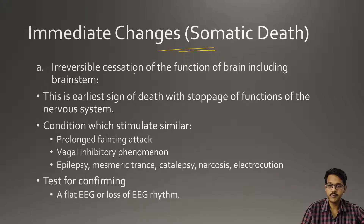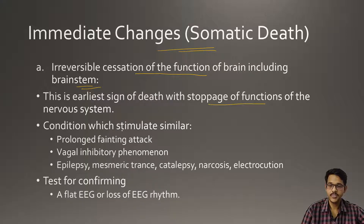In somatic death, the first sign is the irreversible cessation of function of the brain, including the brainstem — complete and irreversible in the sense that brain function cannot be revived. This is the earliest sign of death with stoppage of functions of the nervous system. Conditions which simulate brain death include prolonged fainting attack, vagal inhibition, epilepsy, mesmerism, trance, catalepsy, narcosis, and asphyxiation.